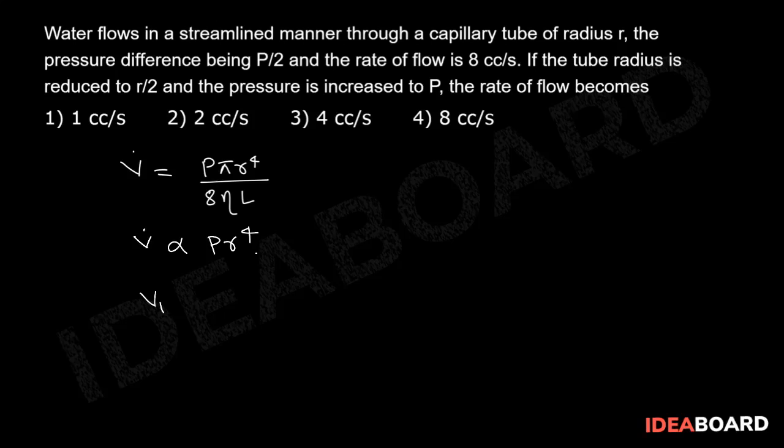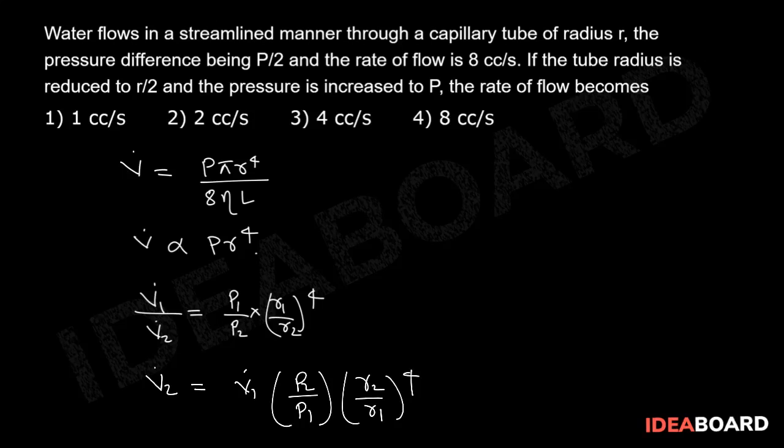Then v1 dot by v2 dot should be equal to p1 by p2 into r1 by r2 whole to the power of 4. Then v2 dot is equal to v1 dot into p2 by p1 into r2 by r1 to the power of 4.